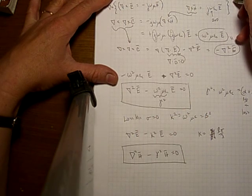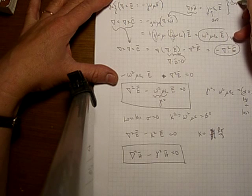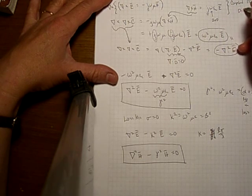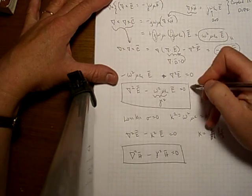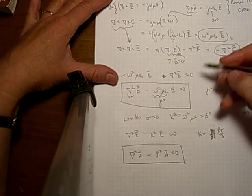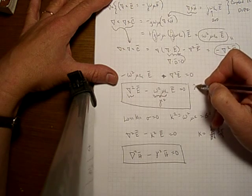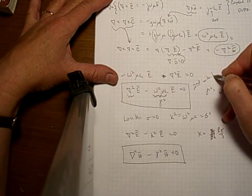Now remember what we said that we started with here was coupled first order differential equations. Down here we got a second order. See that's a second derivative. This is a second derivative. We have a single second order differential equation.